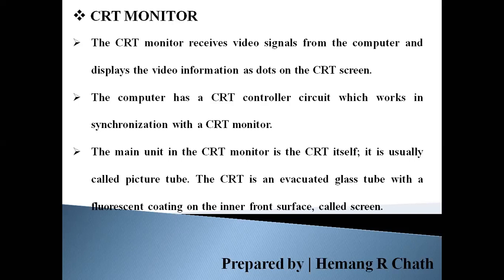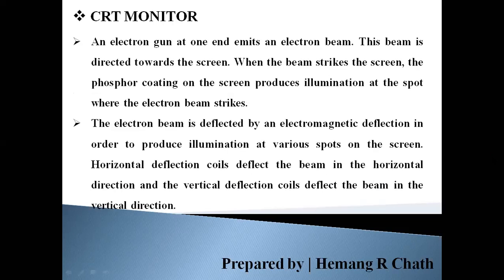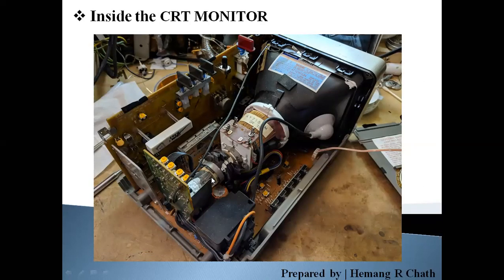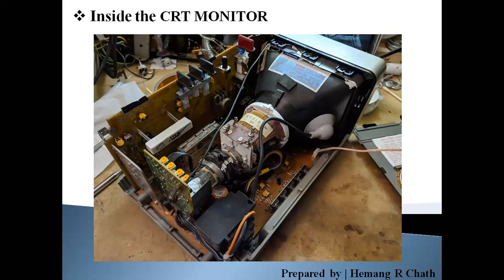Now, looking at the diagram of the CRT monitor — it has a cathode ray tube inside. You can see that inside the monitor there is a cathode ray tube. At one end there is an electronic gun. This electronic gun receives a signal from the CRT controller circuit and emits an electronic beam.